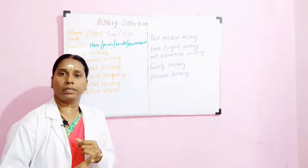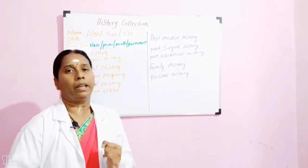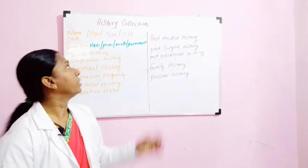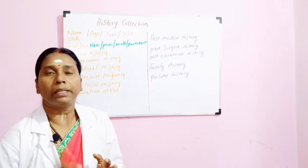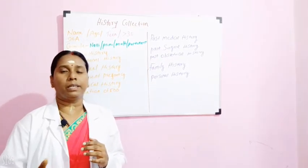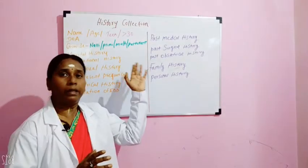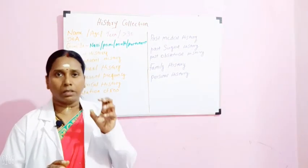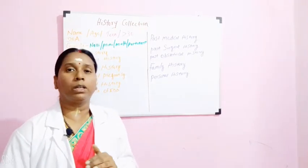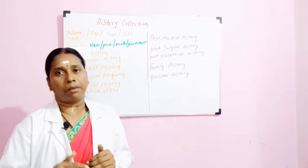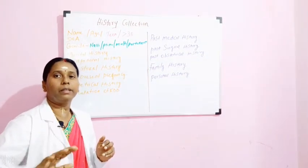In history, you are going to assess the name of the mother. The name of the mother is supposed to be with the initial — that is, the name of the husband also you have to ask. Then comes the age. When we are coming to the age of the mother, we are going to assess whether the woman is a teenager or if the pregnancy is above 30. If the mother is in the teenage, you categorize the woman or the adolescent as an adolescent pregnancy. In case the woman is above 30 years, you will be categorizing under elderly primae gravida mother.